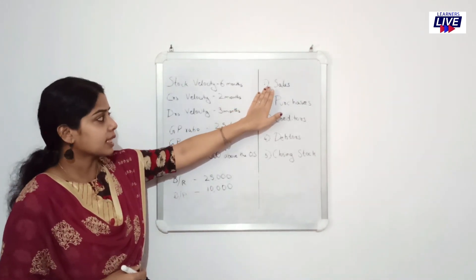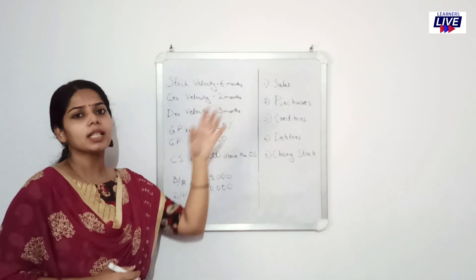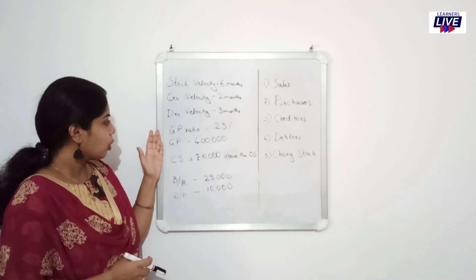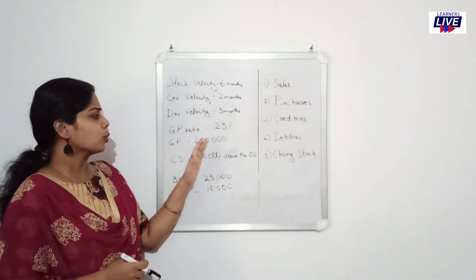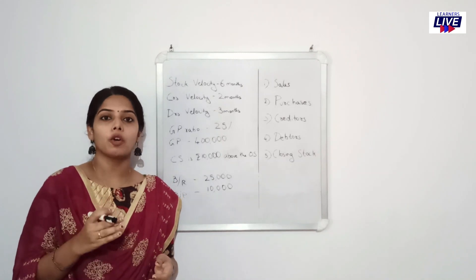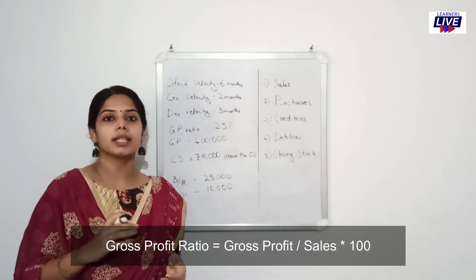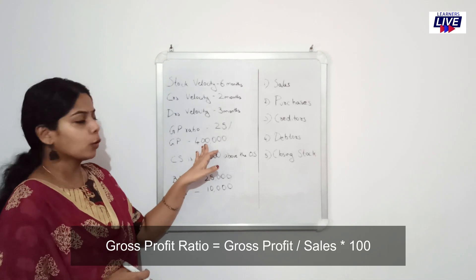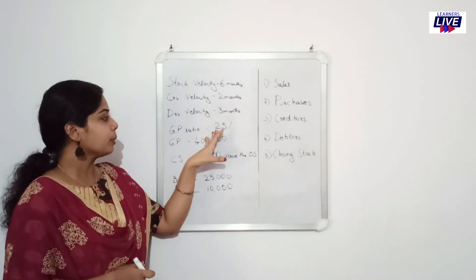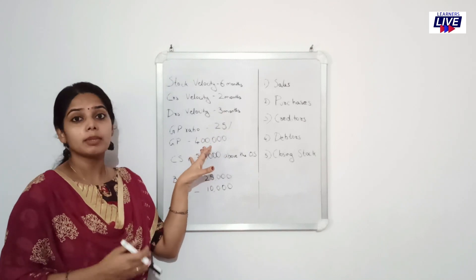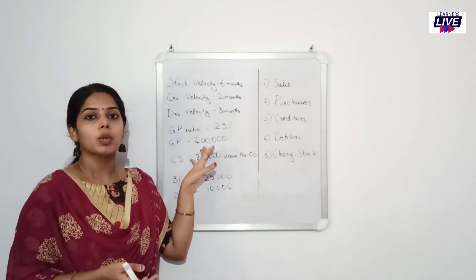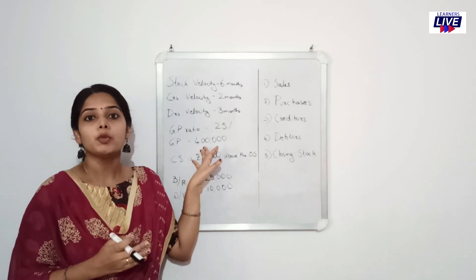So what we have done is sales. We have the information about sales. What is the gross profit ratio? Gross profit divided by sales into 100. That is the same as 4 lakhs. Sales is 25%, which is 4 lakhs. Sales equal to 4 lakhs into 100 by 25.